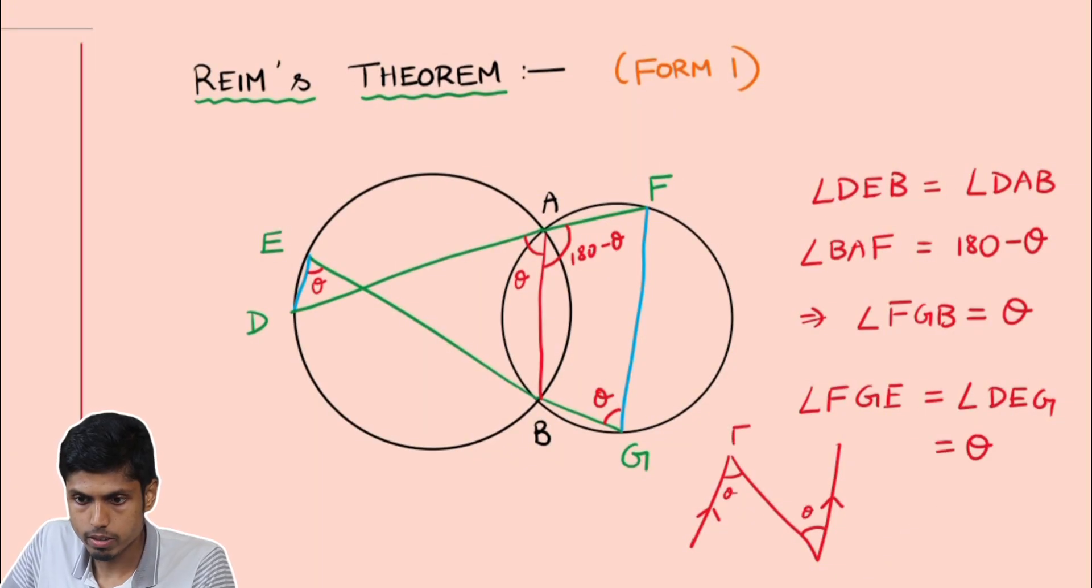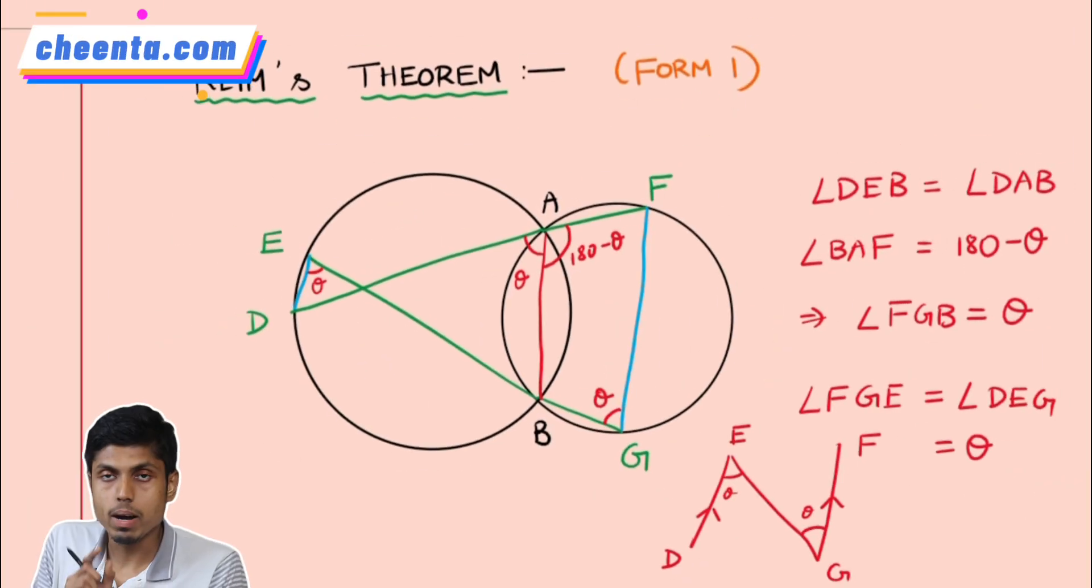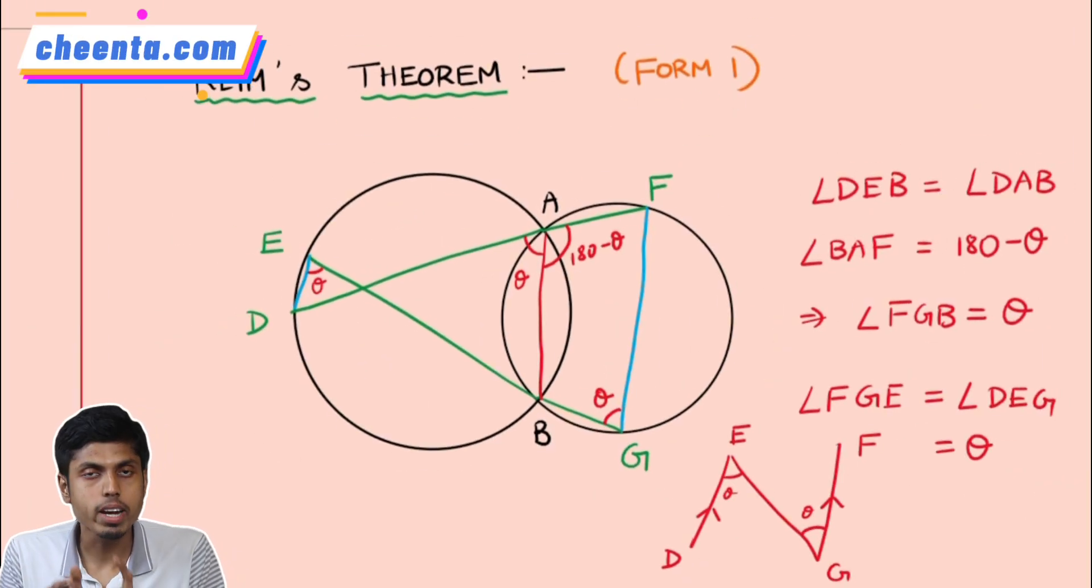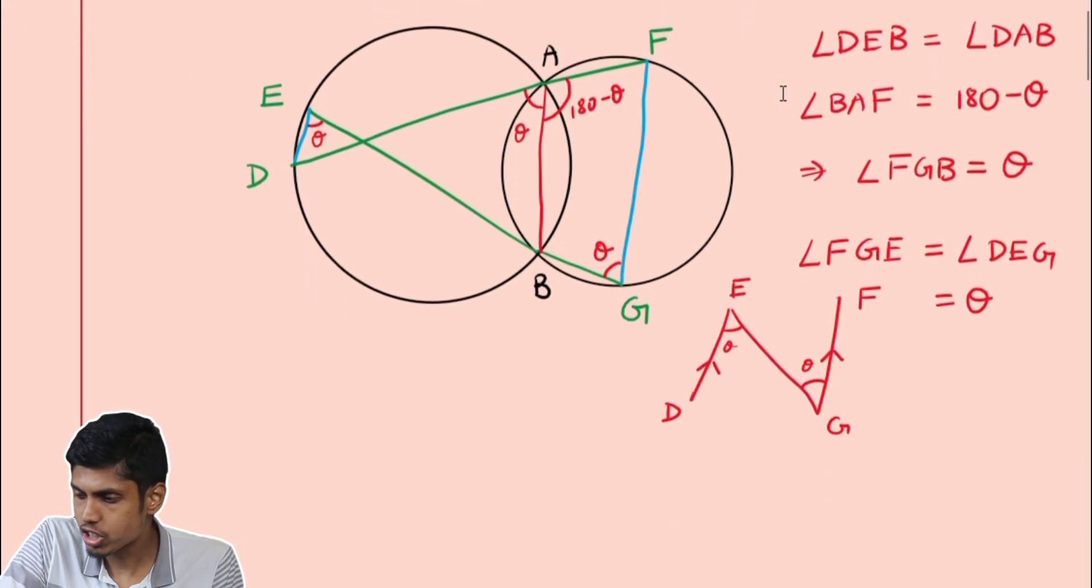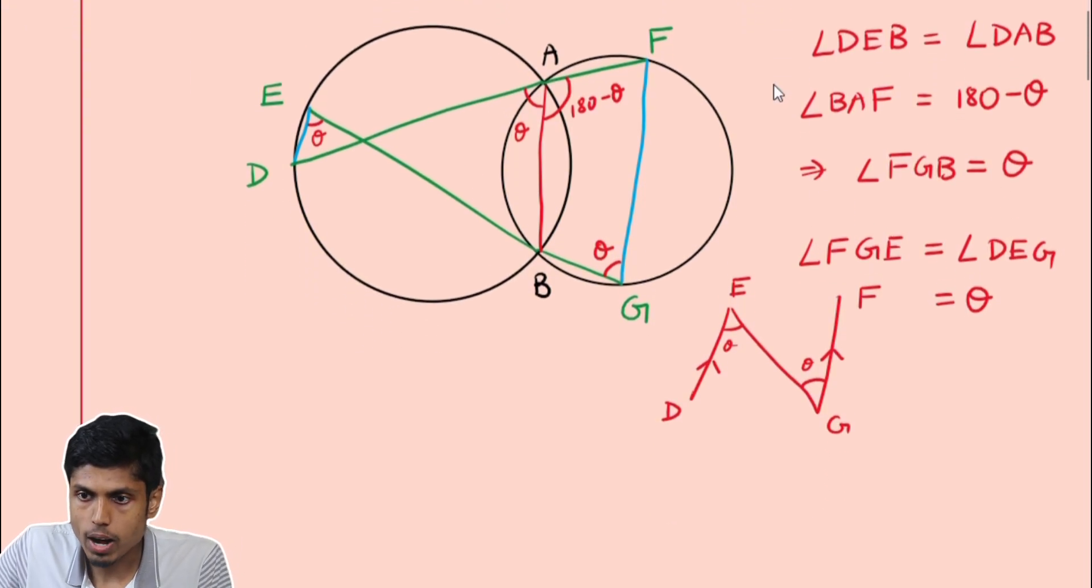So this is the configuration we have E here, G here, F here and D here. But the same form can occur in a different configuration. So you should be aware of both such occurrences in order to identify them in intricate configurations.